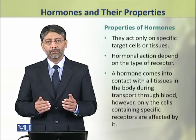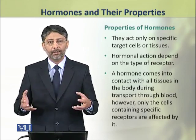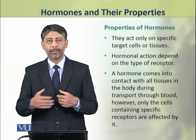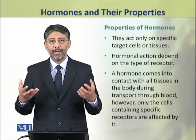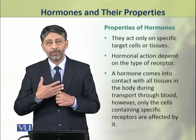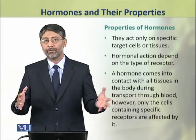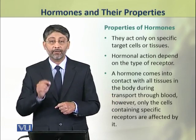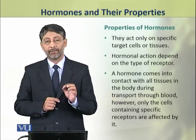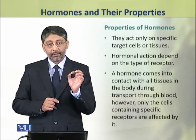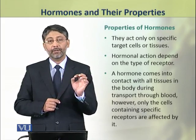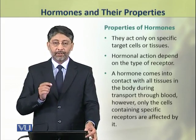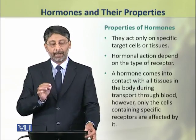A hormone comes in contact with all types of tissues in the body during circulation. When the hormone is made by a gland and enters the blood, the blood carries it throughout the body and all types of tissues are exposed to it. But this hormone acts only on its target cells, because of the presence of receptors which are not present in every cell. Only the cells which have these receptors are affected by the hormone.